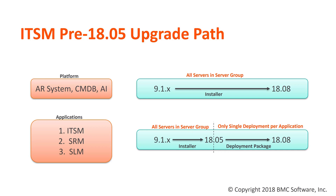Once this is done for all servers in the server group, the applications can then be upgraded from 9.1.x to 1805 for ITSM, SRM, and SLM, for all servers in the server group. Then once that is completed, the applications can be upgraded using the deployment packages for ITSM, SRM, and SLM, in that order.